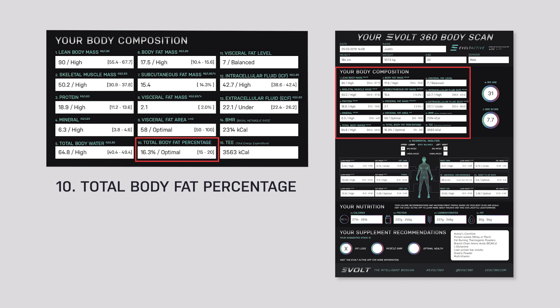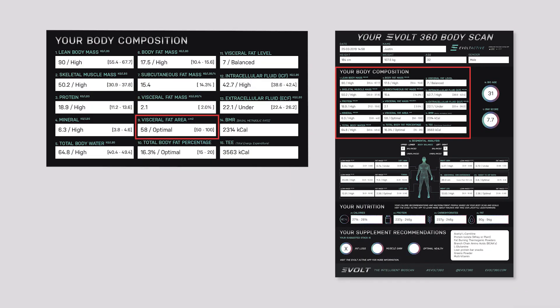Totalling that up at the bottom, we have a total body fat percentage, which takes into account both your subcutaneous and your visceral fat, again with an optimal, under, or high within the reference ranges on the side. As I'll state later, during training, body fat percentage will fluctuate with body weight because it is only your body fat mass as a percentage of your total body weight.